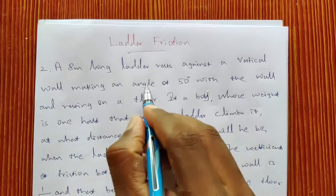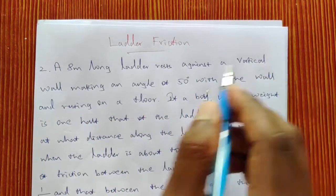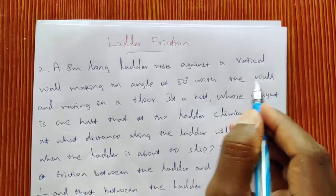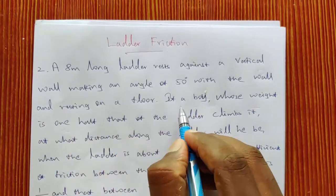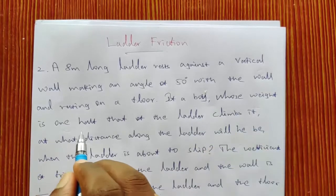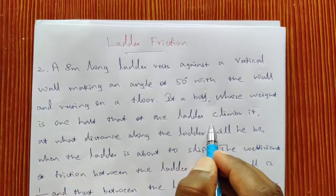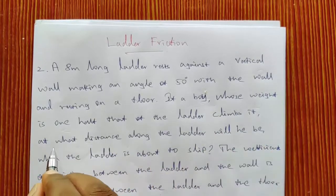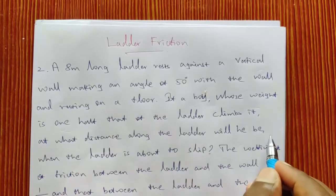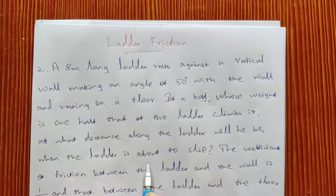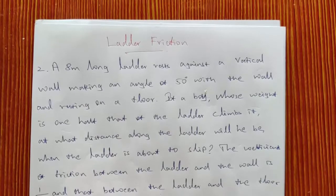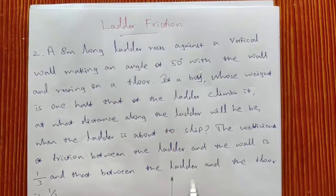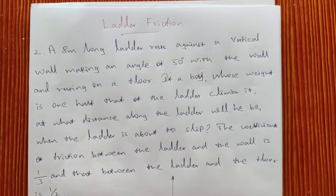An 8 meter long ladder rests against a vertical wall making an angle of 50 degrees with the wall and resting on a floor. If a boy whose weight is half that of the ladder climbs it, at what distance along the ladder will he be when the ladder is about to slip? The coefficient of friction between the ladder and the wall is 1/3 and that between the ladder and the floor is 1/2.